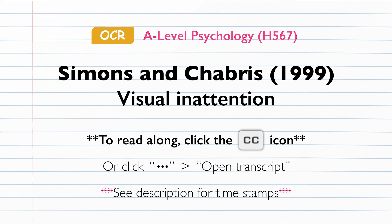The study by Simons and Chabris was a laboratory experiment, which meant that there are high levels of control. The researchers ensured that the procedure was standardised by writing a protocol which detailed exactly how the experiment should be run, and distributed it to the experimenters. This also helped minimise any extraneous variables and makes the experiment highly replicable. The study collected a lot of quantitative data by calculating the percentages of participants in each condition who noticed the unexpected event, meaning that the results could be easily compared and analysed, helping to make the experiment more reliable.